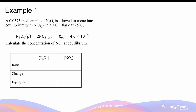The initial concentration of N2O4 can be calculated by dividing the moles by the volume, which is 1 litre, giving 0.0375 mol/L. The initial concentration of the product is 0. As the reaction proceeds towards equilibrium, the concentration of the reactant decreases by x, while the concentration of the product increases by 2x due to the stoichiometric ratio.